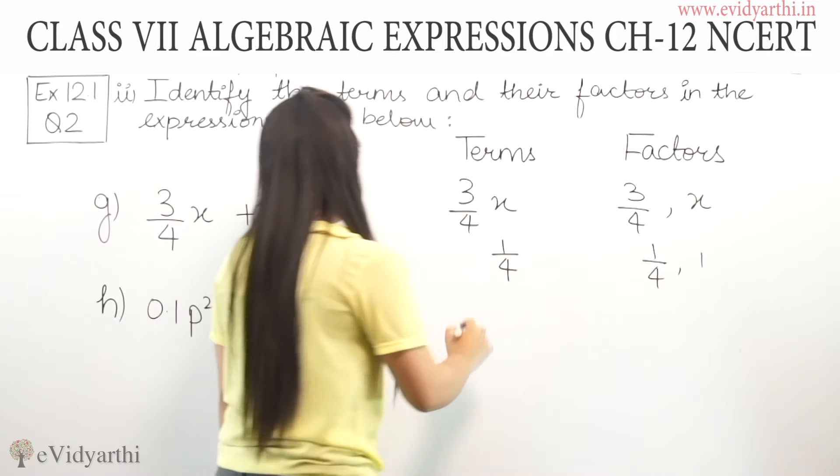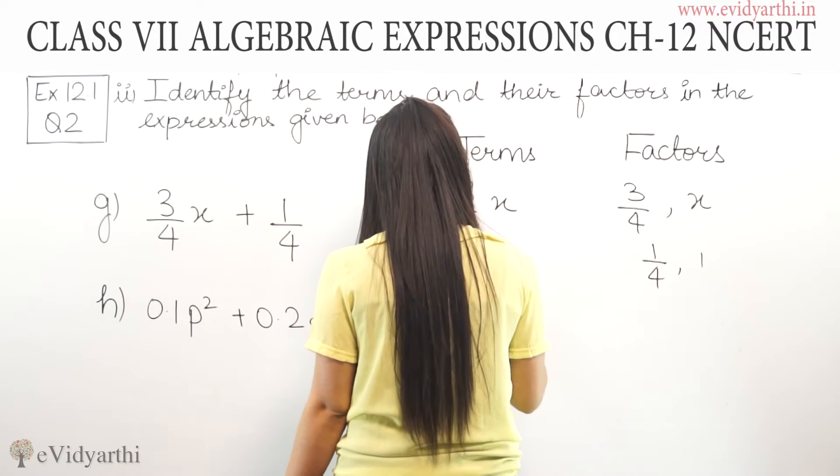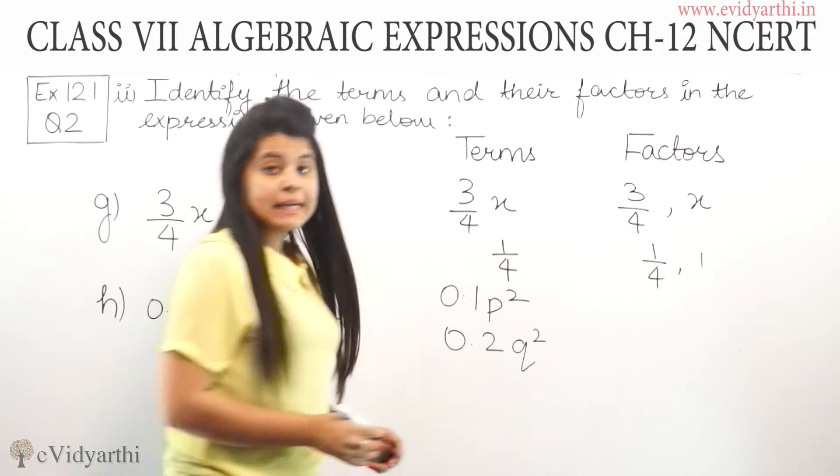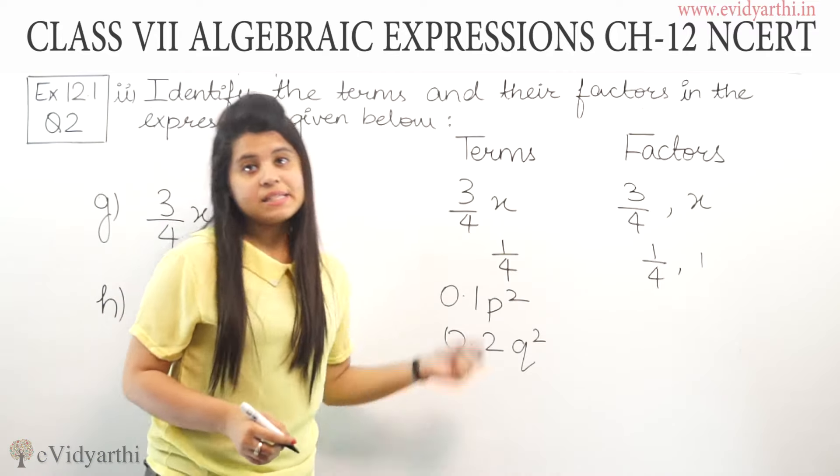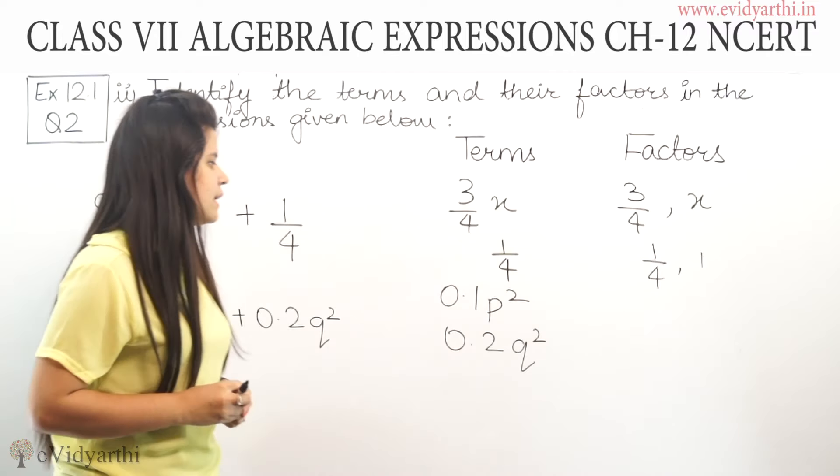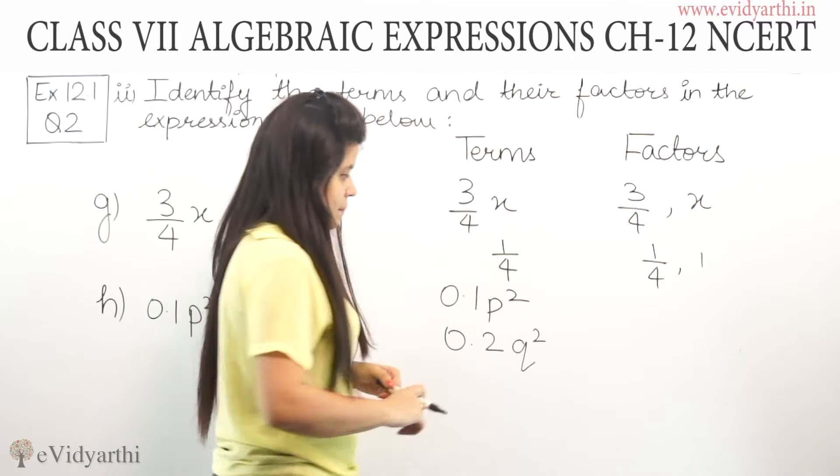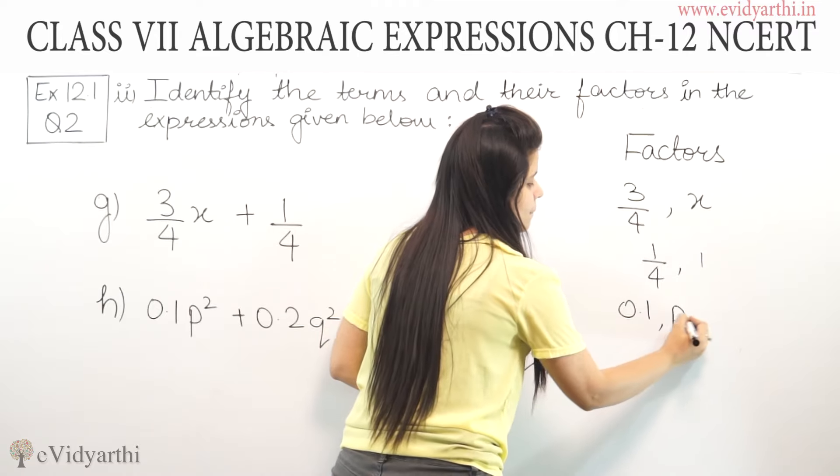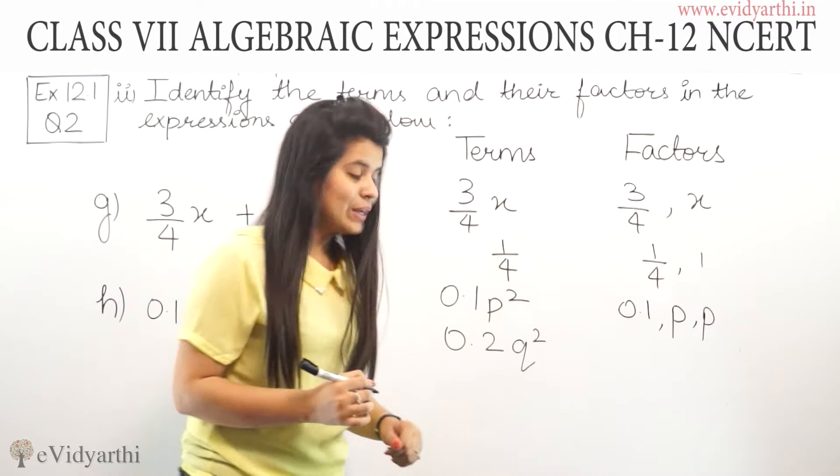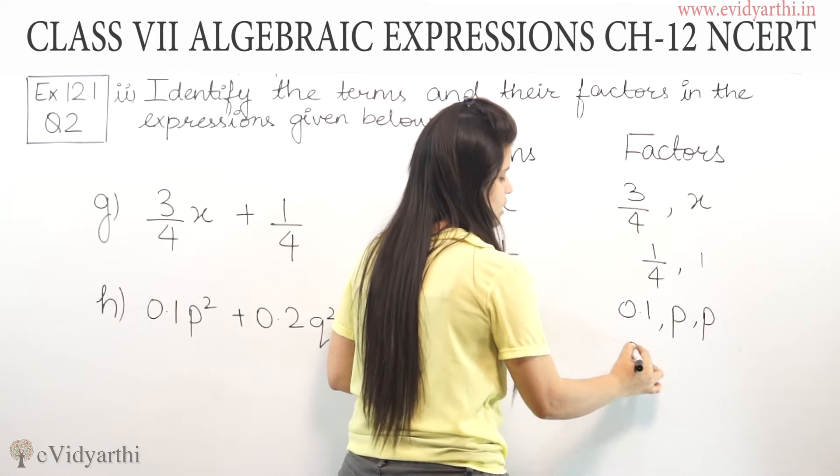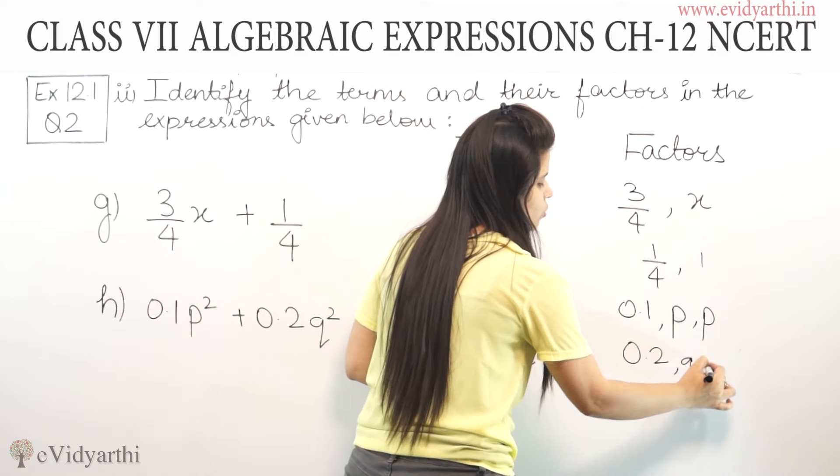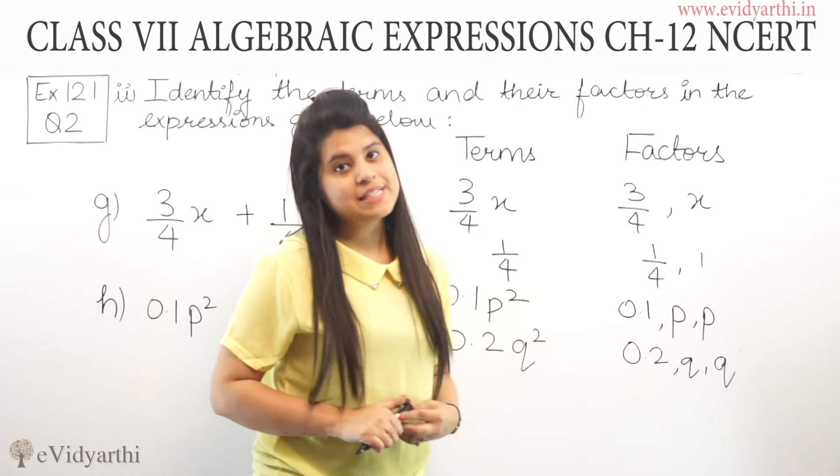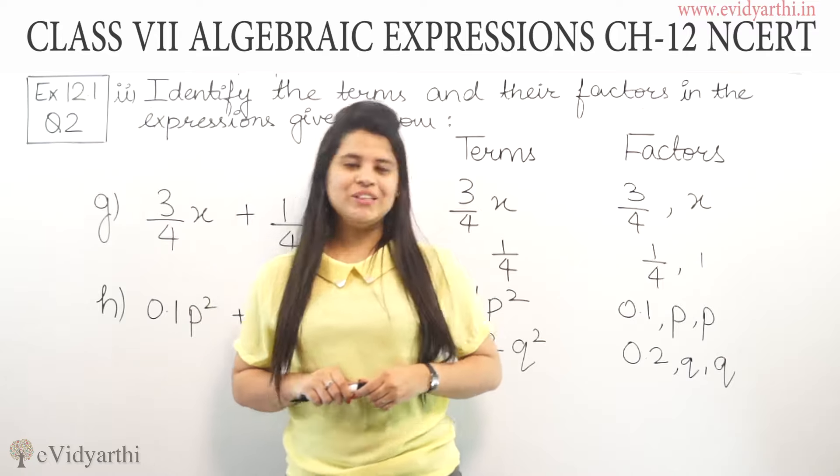For part h, we have 0.1p² + 0.2q². Again, with decimal numbers, we treat them the same way. For 0.1p², the factors are 0.1, p, and p (since p²). For 0.2q², the factors are 0.2, q, and q. This was question number 2, parts one and two. Now, let's come to question number 3.